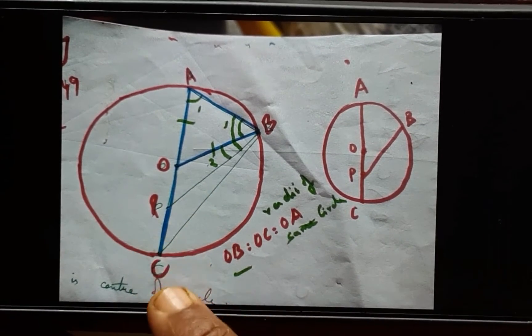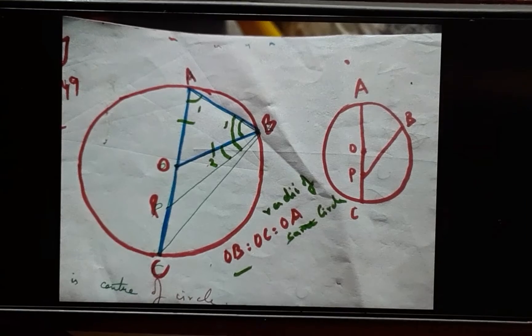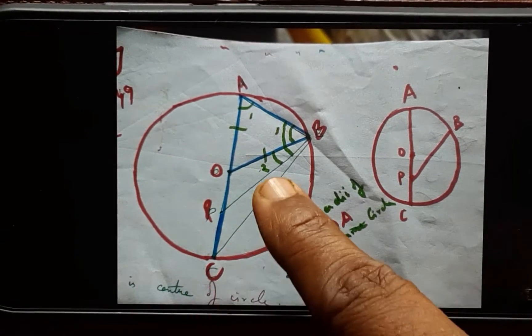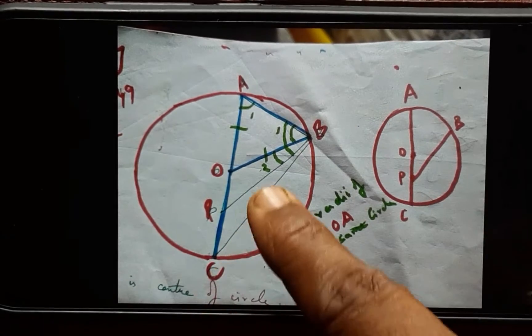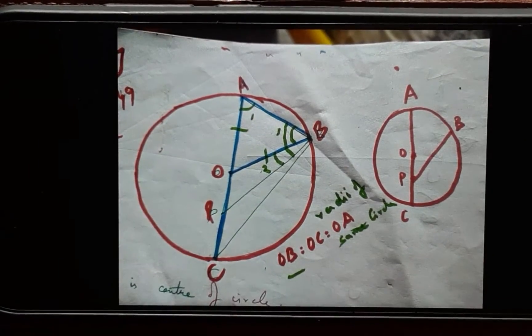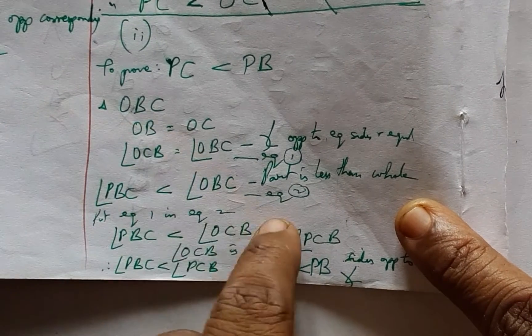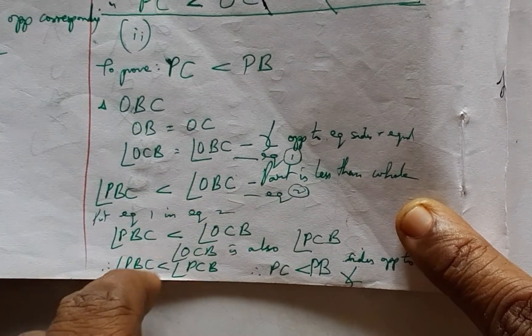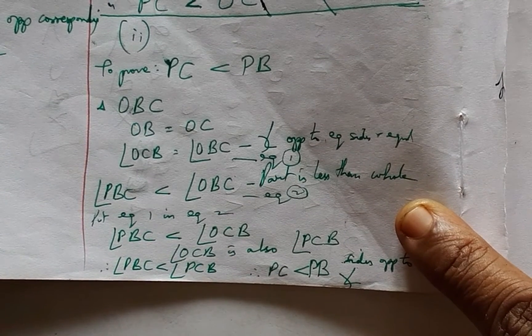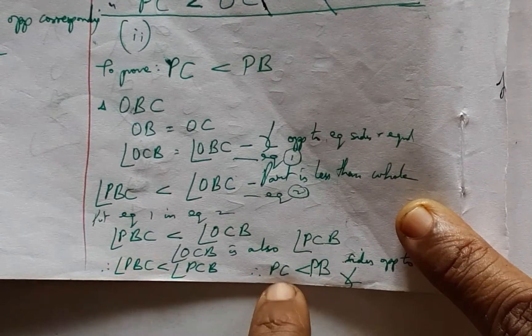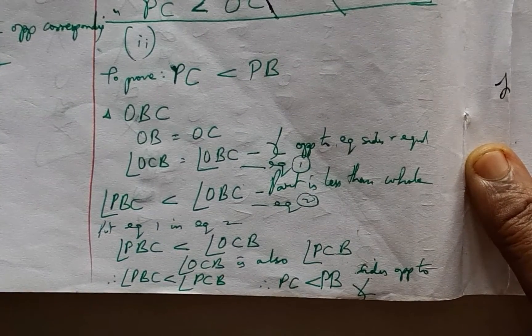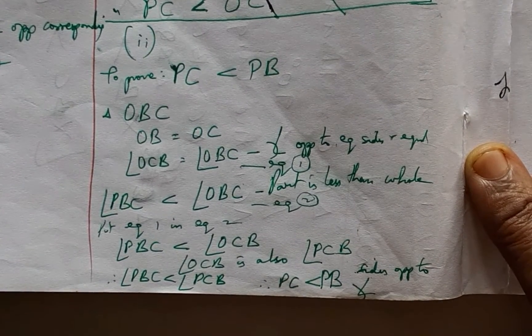And therefore this angle C is equal to angle B. And here we can clearly see that PBC is part of OBC, and therefore the whole is always greater than the part. And therefore from this equation we can satisfactorily conclude that PBC is less than PCB. And now we come to the respective sides opposite to those angles and arrive at the required proof.